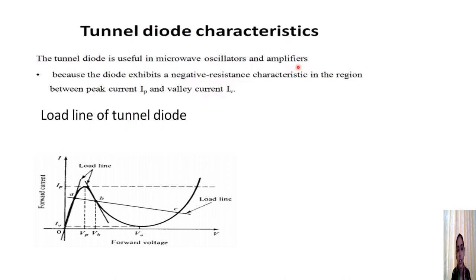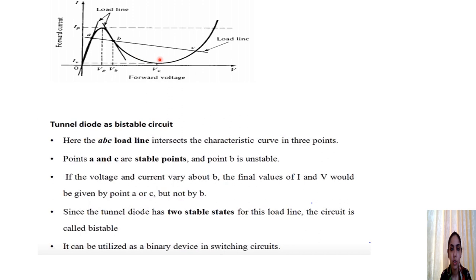This figure shows the IV characteristics of tunnel diode. From the IV characteristics we can draw some inferences by considering three load lines. The first load line is ABC, touching three points in the IV diagram. In this condition, the tunnel diode works as a bistable circuit.